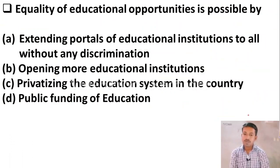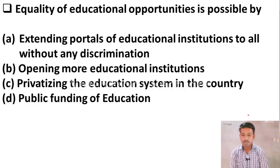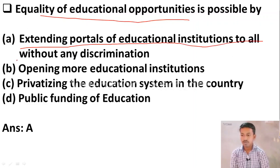Next question: Equality of educational opportunities is possible by — Option A: extending portals of educational institutions to all without any discrimination. Option B: opening more educational institutions. Option C: privatizing the education system. Option D: public funding of education. The right answer is Option A — equality of educational opportunities is possible by extending portals of educational institutions to all without any discrimination.